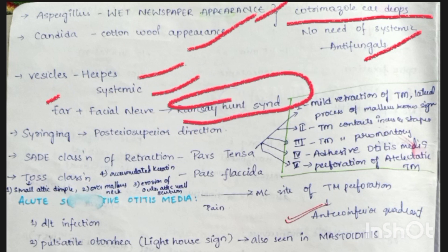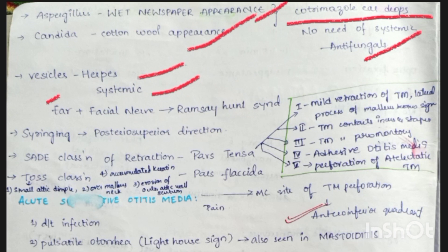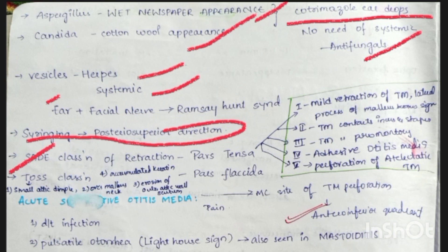Syringing is done in the posterior superior direction. Sade classification is used for pars tensa retraction: Stage 1 — mild retraction, lateral process of malleus becomes prominent; Stage 2 — tympanic membrane contacts incus and stapes; Stage 3 — tympanic membrane contacts promontory; Stage 4 — adhesive otitis media; Stage 5 — perforation of the atelectatic tympanic membrane.